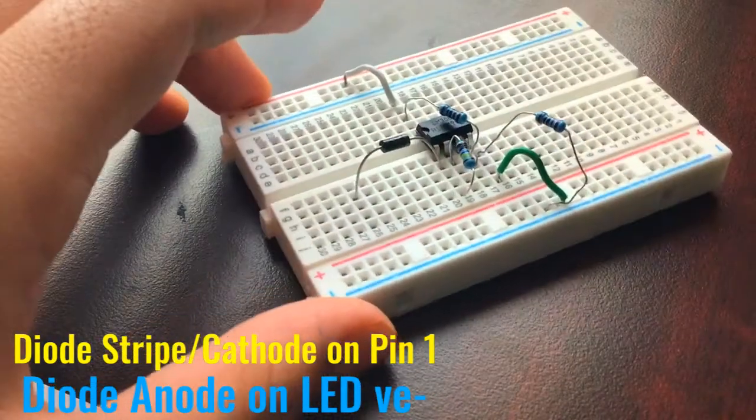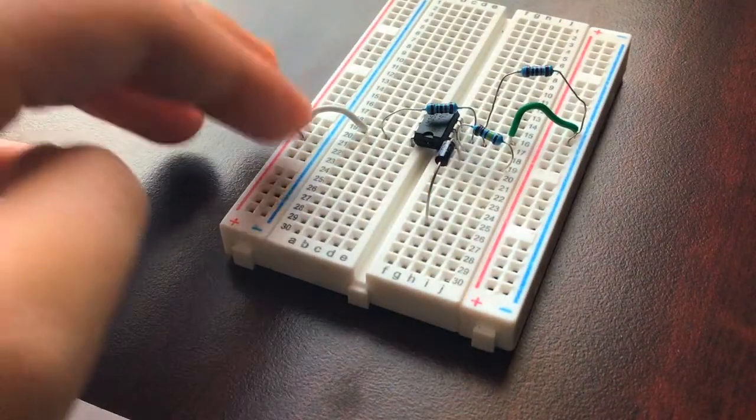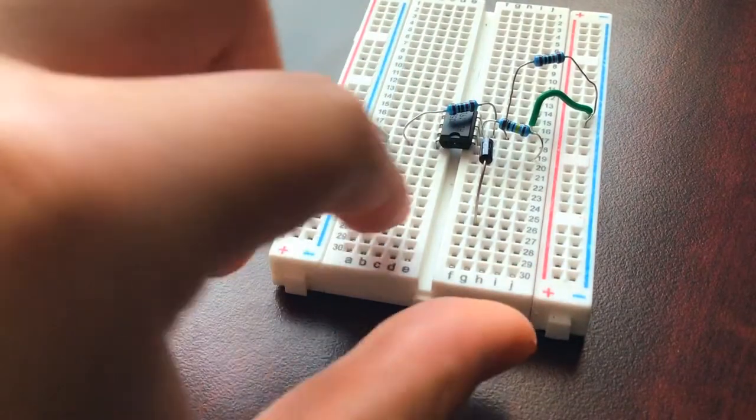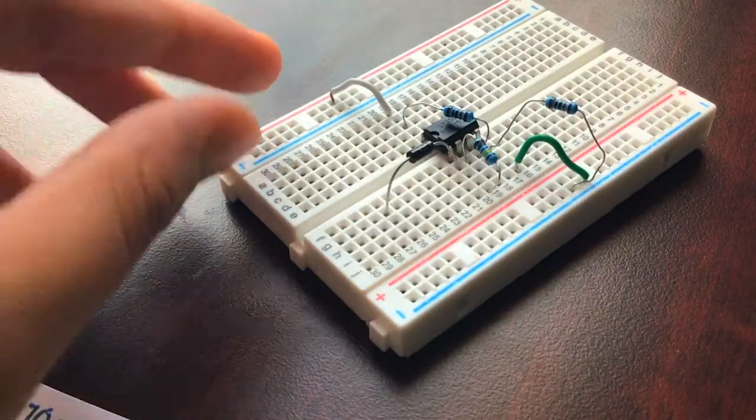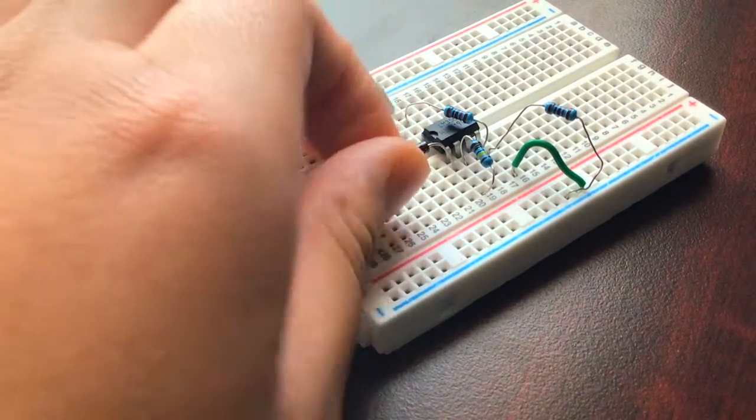Because this LM358 op-amp, once it receives the voltage divider and all the signals coming at it, releases so much extra voltage that we do not need, this diode drops it as heat.